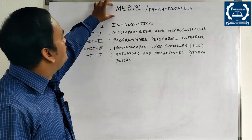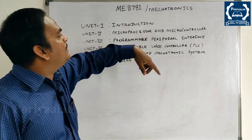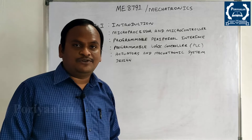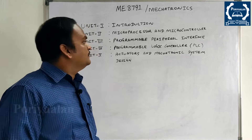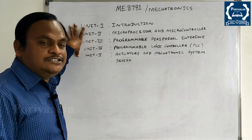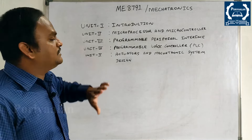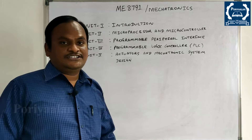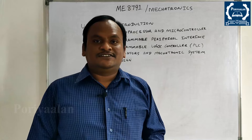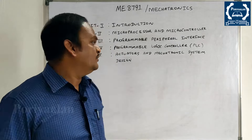The subject code is ME8791, Mechatronics. This is the 7th semester. There are 5 units. The first unit is Introduction, covering types of Mechatronics Systems and types of Open Loop and Closed Loop Systems.